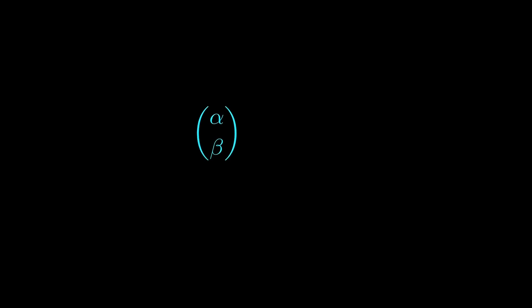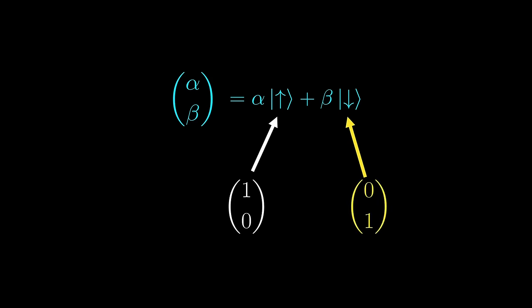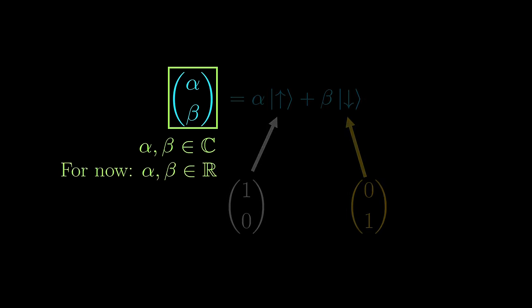You might have seen it described as alpha times spin-up plus beta times spin-down, where the spin-up state is described by the vector (1,0) and spin-down by (0,1). However, it will be very difficult to visualize a 2-dimensional complex vector, so for now let's consider them being real first, and generalize to complex numbers later.